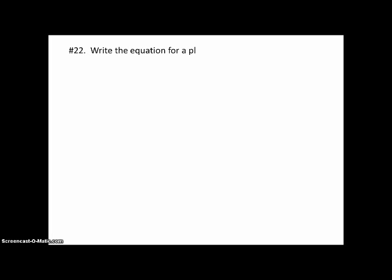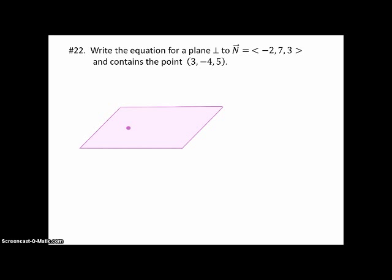Problem number 22. Write the equation for a plane perpendicular to N that contains the point (3, -4, 5). All right, so here's the point, 3, negative 4, 5. Here's any generic point on the plane, and the red vector is N, and the black vector represents any vector on the plane that originates from (3, -4, 5).